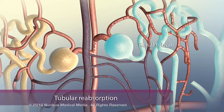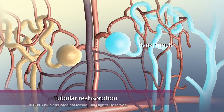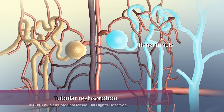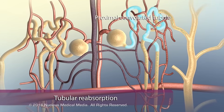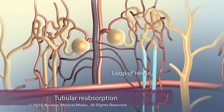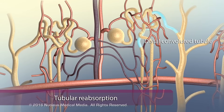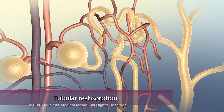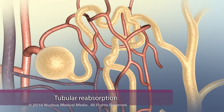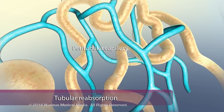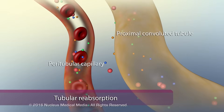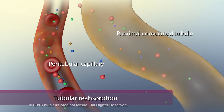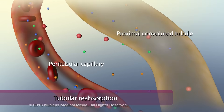During the second step of urine production, called tubular reabsorption, the fluid passes through the renal tubule, which consists of the proximal convoluted tubule, loop of Henle, distal convoluted tubule, and collecting duct. As the fluid passes through the renal tubule, it reabsorbs useful substances into the peritubular capillaries. Specifically, glucose, amino acids, and some sodium and calcium ions are reabsorbed by active transport.